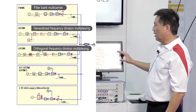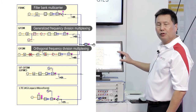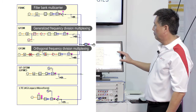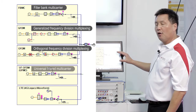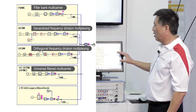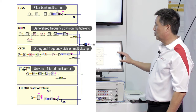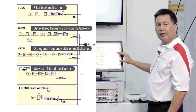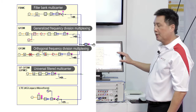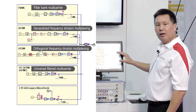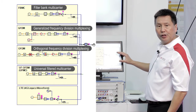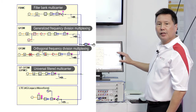There is also filtered OFDM that is being investigated, and there is UFMC — also known as universal filtered multi-carrier — and down below here we have our 4G waveform, which is LTE.